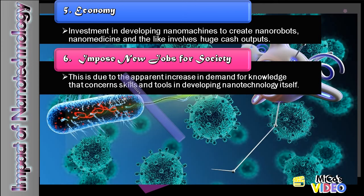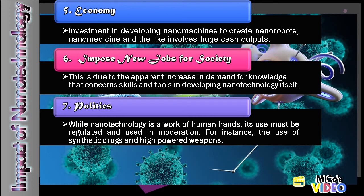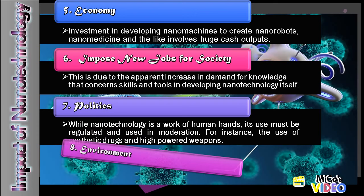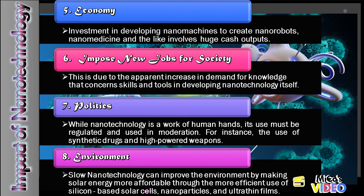And lastly, we have politics and the environment. While nanotechnology is a work of human hands, its use must be regulated and used in moderation — for instance, in the use of synthetic drugs and high-powered weapons. Appropriate laws must be enacted to prevent misuse, manipulation of humans, and destruction of the environment. Regarding the environment, nanotechnology can improve it by making solar energy more affordable through more efficient silicon-based solar cells, nanoparticles, and ultra-thin films. Agricultural benefits also come through the aid of drug and fertilizer delivery systems.